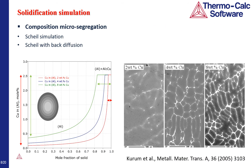One last aspect I would like to show about solidification is the prediction of composition segregation in the aluminum grains. As shown on the left-hand side, during non-equilibrium solidification, copper atoms would be accumulated in the outer ring of the grains. Homogenization treatment reduces the composition difference between the cores and the outer rings, but also increases the thickness of the outer rings. This prediction agrees very well with the experimental microstructures observed in the literature.